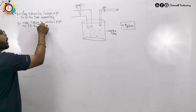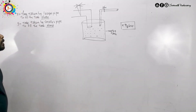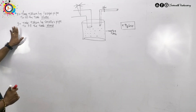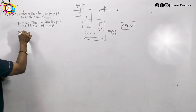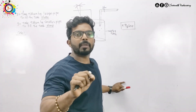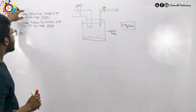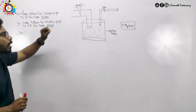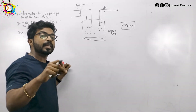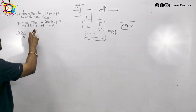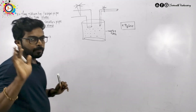Time taken by smaller pipe to fill the tank separately — the same time taken by the smaller pipe. There is an equation equal to 1, which means: larger diameter pipe, the time to fill the tank is x; and the time to fill the tank for the smaller diameter pipe is y, and I will say y-10. The equation is 1/x and 1/(y-10).